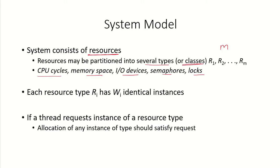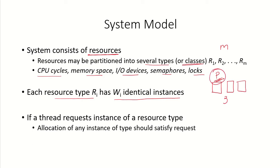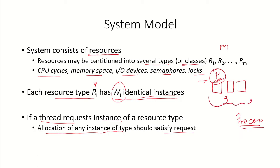Each resource type can have wi identical instances. For example, if there is a printer of a particular type and configuration, and there are two or three printers of exactly the same type, we say there are three instances of that resource. Each resource ri can have multiple identical instances, or just a single instance. If any thread or process requests an instance of a resource type, allocation of any instance satisfies the request — so allocating any one of these identical printers satisfies the requesting process.